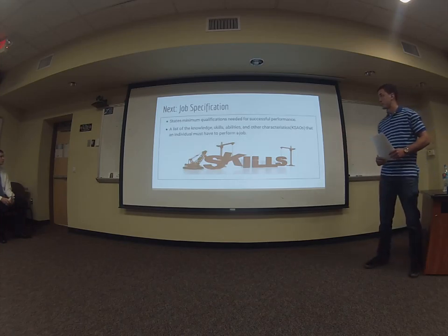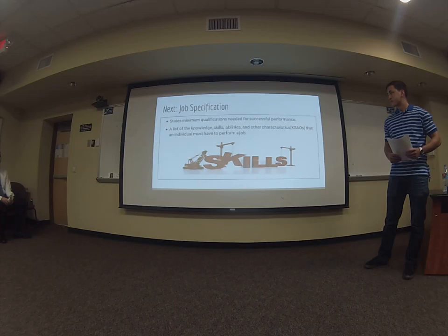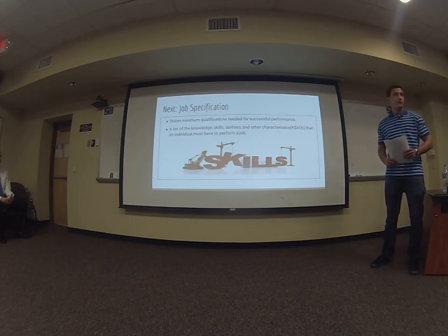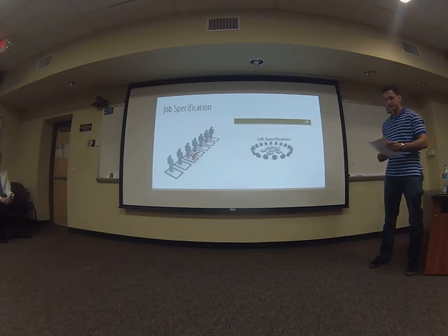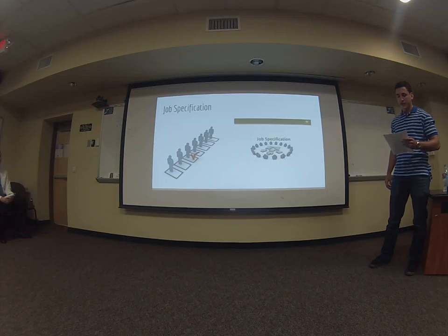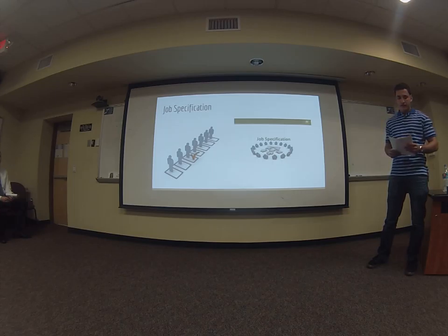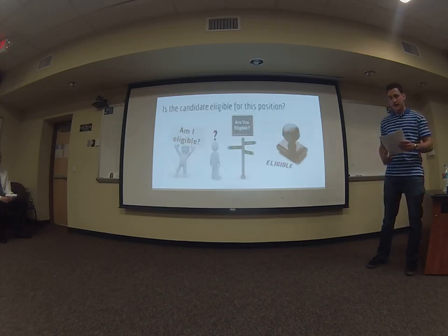Job specification states the minimum qualifications needed for successful performance. It's a list of knowledge, skills, abilities, and other characteristics — known as KSAOs — that an individual must have to perform a job. It also includes level of experience, physical, emotional, technical, and communication skills required. It includes general health, mental health, intelligence, aptitude, memory, judgment skills, leadership skills, emotional ability, adaptability, flexibility, values and ethics, manners, and creativity.